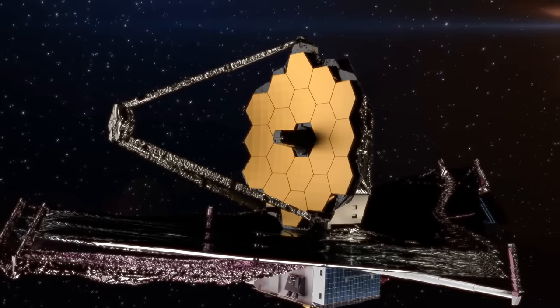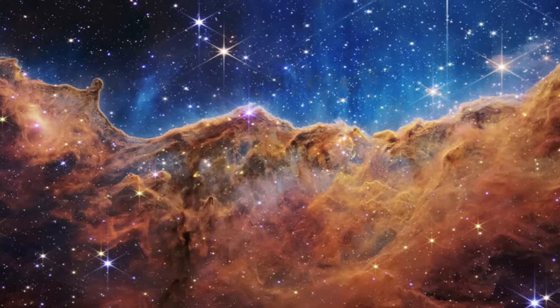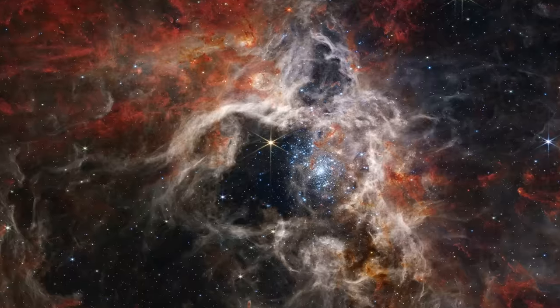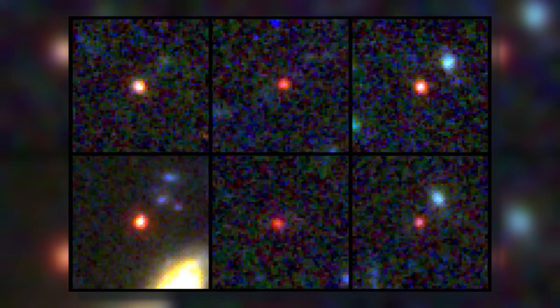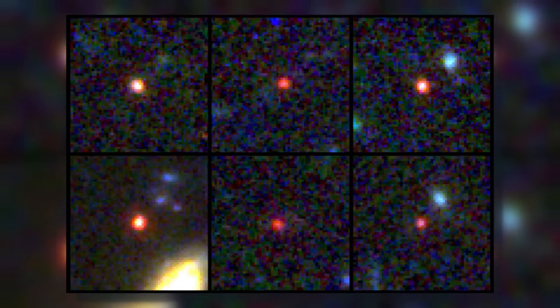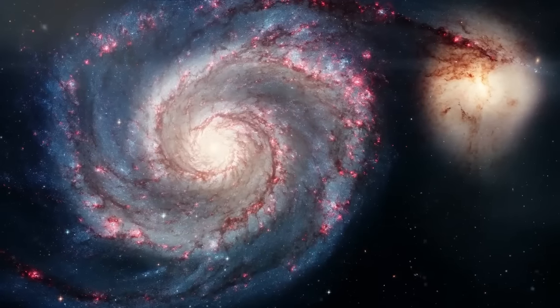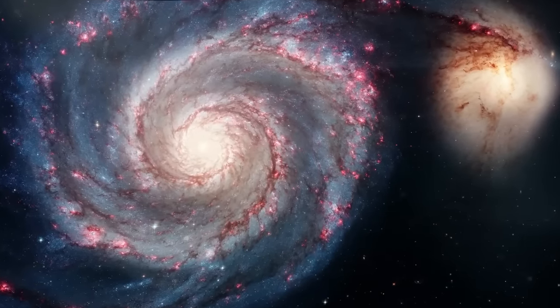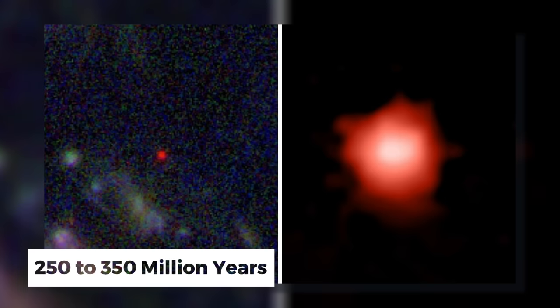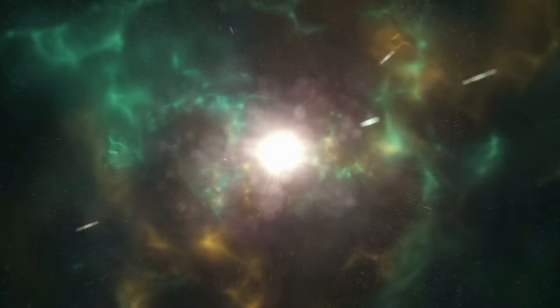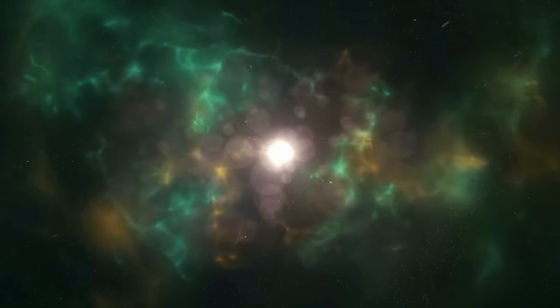The James Webb Space Telescope's initial photographs have already sparked intense debates within the scientific community. It has captured visuals of six ancient galaxies said to have been present at dawn, thereby questioning our existing theories about the universe's inception. For instance, the galaxy GLASS Z-13, which came into existence merely 250 to 350 million years post the Big Bang, contradicts current theories that suggest galaxies take billions of years to form.